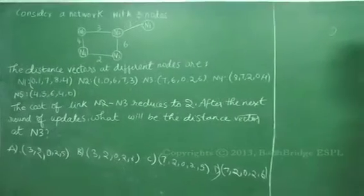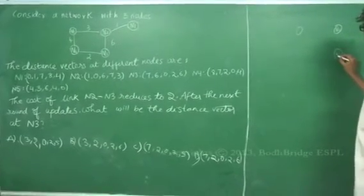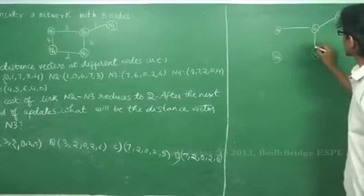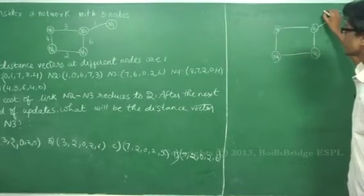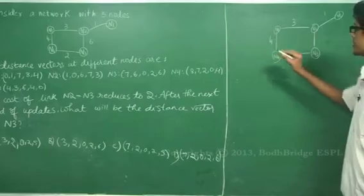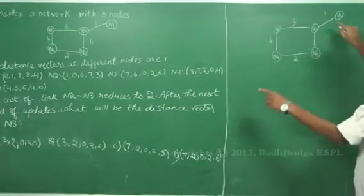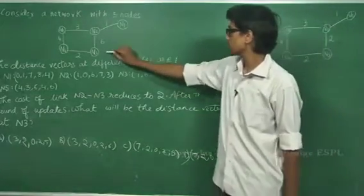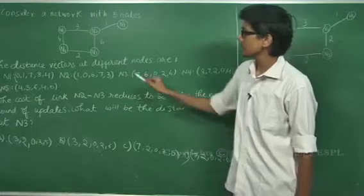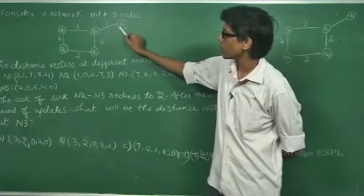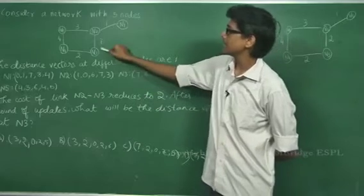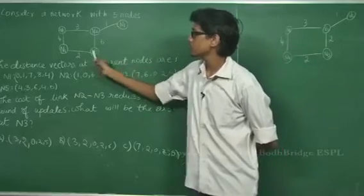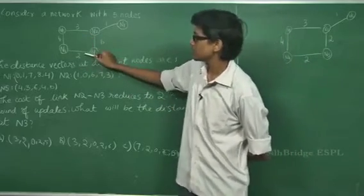The updated graph has nodes N1, N2, N3, N4, and N5. The other distances remain the same: N1-N2 is 1, N2-N5 is 3, N1-N5 is 4, and N3-N4 is 2. The N2-N3 link is changed from 6 to 2. Initially the distance vector at N3 was [7, 6, 0, 2, 6] — the shortest distance from N3 to N1 was 6+1=7, to N2 was 6, to itself 0, to N4 was 2, and to N5 was 2+4=6.